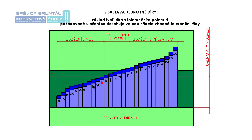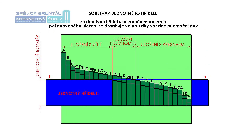Z ekonomických důvodů byly vytvořeny dvě soustavy, které obsahují vybraná uložení a omezuje se tím počet potřebných pomůcek pro výrobu i proměření. První z nich je soustava jednotné díry – různých vůlí a přesahů se dosahuje kombinací několika vůlí pro hřídele a jednotné tolerance pro díru. Tolerance díry má polohu velké H a má nulovou dolní mezní úchylku. Druhá soustava je soustava jednotného hřídele, kdy různých vůlí a přesahů se dosahuje kombinací několika vůlí pro díry a jednotné tolerance pro hřídel. Tolerance hřídele má polohu malé h a má nulovou horní mezní úchylku.